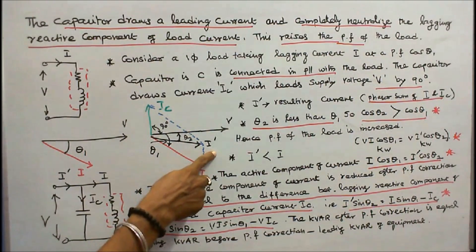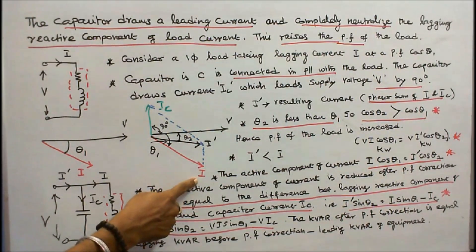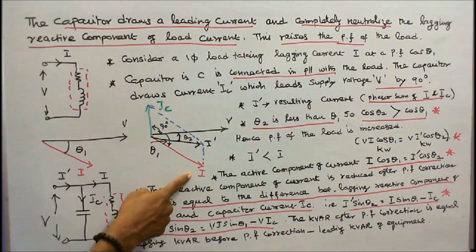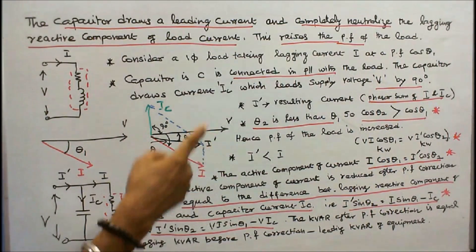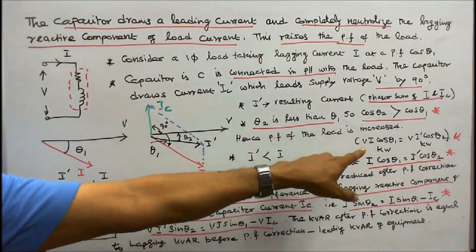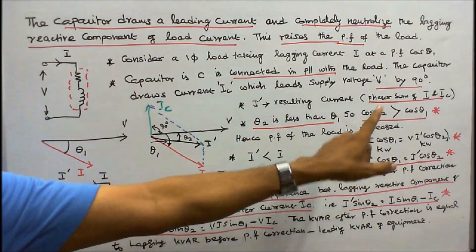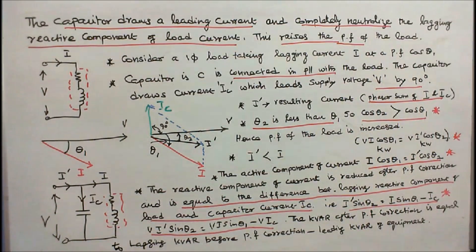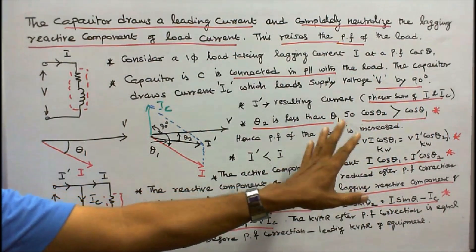The resultant current I dash is less than load current I. The active component of current, I cos theta 1, is equal to I dash cos theta 2. Multiplying by V: V I cos theta 1 equals V I dash cos theta 2. Since real power P equals V I cos theta, before power factor correction it is V I cos theta 1, and after correction it is V I dash cos theta 2. Therefore, the real power remains constant.